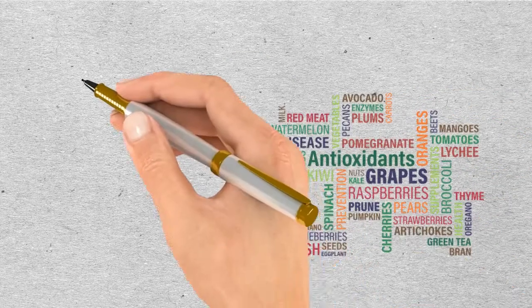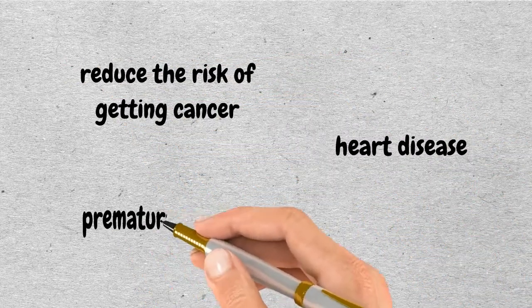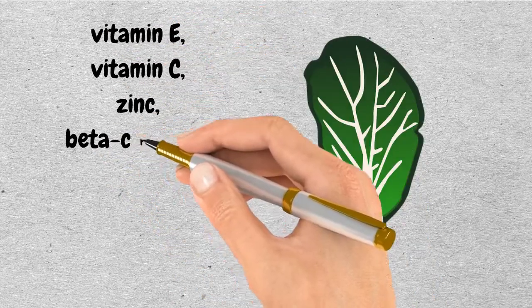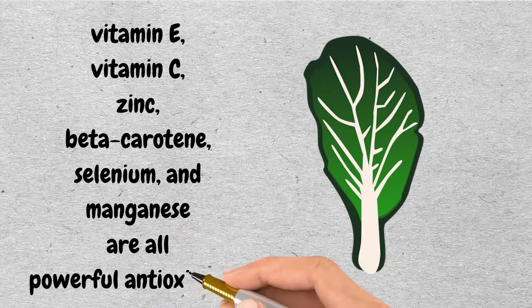Another important group of ingredients found in spinach are antioxidants. They are believed to reduce the risk of getting cancer, heart disease, and premature blindness. In spinach, vitamin E, vitamin C, zinc, beta-carotene, selenium, and manganese are all powerful antioxidants.